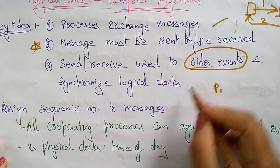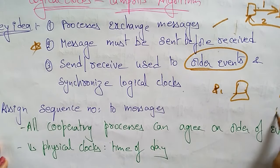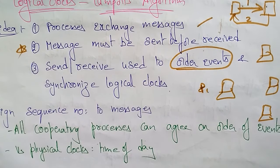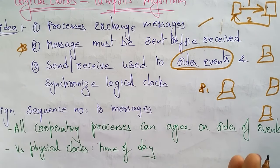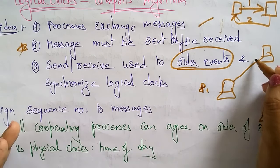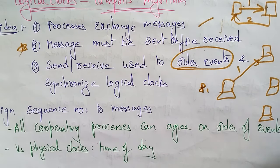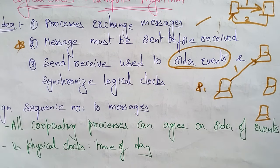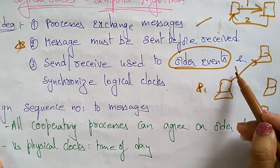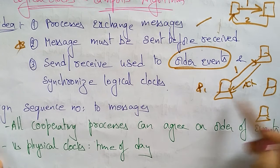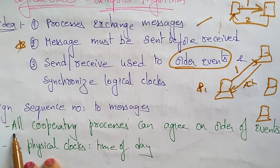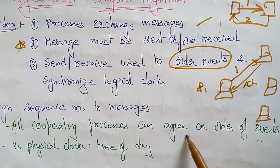Suppose this is one system, here is another system, and here is another system — this is a distributed environment. We are discussing about distributed systems, so many systems participate in the network. We have to assign a number to each message. After the completion of one message you need to send another message to the same system or to another system — that is the order of events. Whenever one message is acknowledged and completed, only then do you send another message.